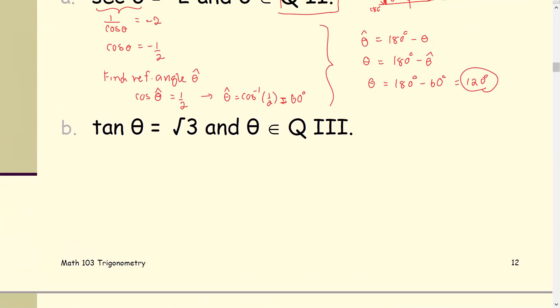Next example: tangent theta equals square root of 3 and the angle terminates in the third quadrant. The tangent theta has a positive sign, so we use the same value to find theta-hat. The tangent of the reference angle theta-hat equals square root of 3, so theta-hat equals the inverse tangent of square root of 3. Using the calculator or the unit circle, theta-hat equals 60 degrees.